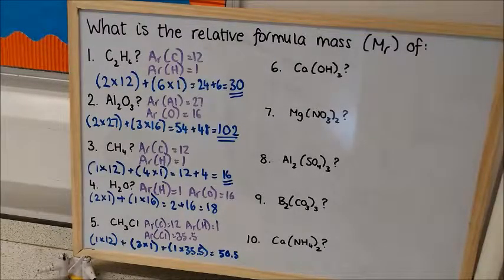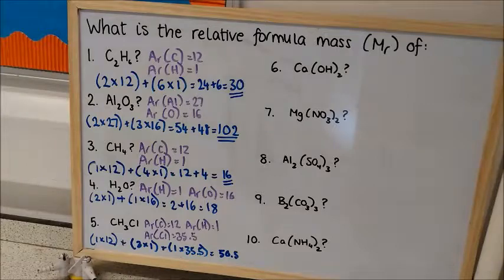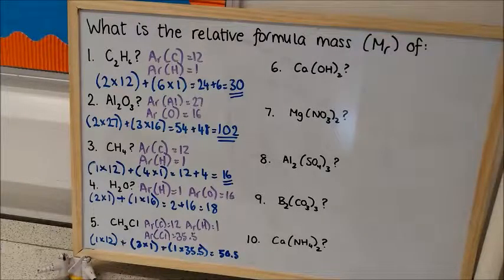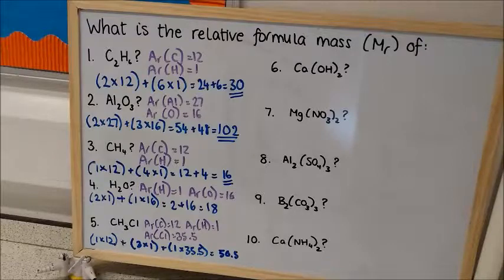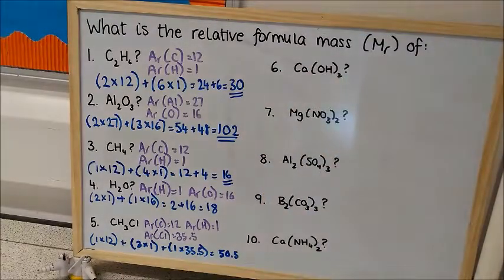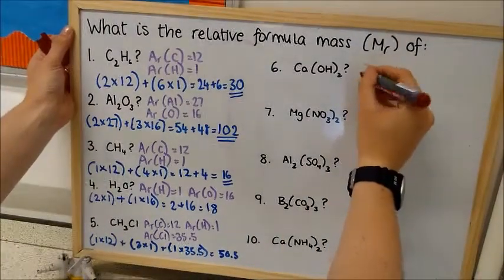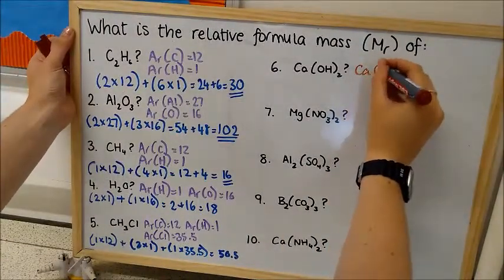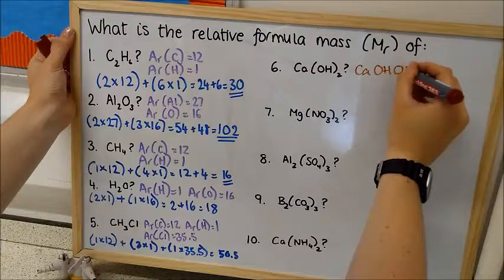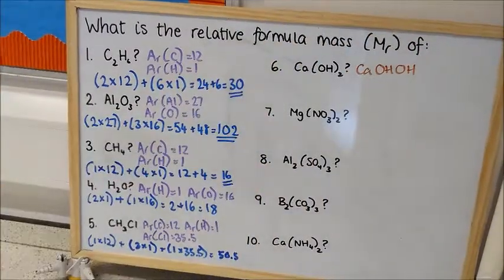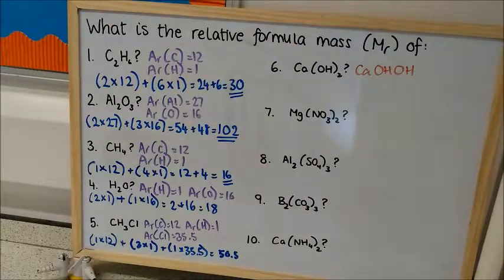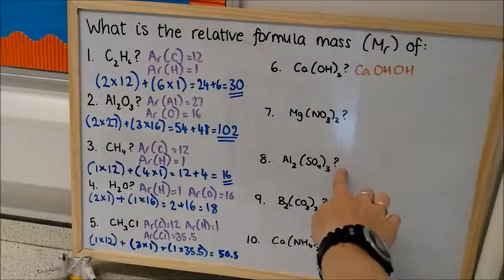Now these next five questions are slightly more complicated, because the formulae involve brackets. Now if you're not very confident about using brackets, what I would suggest you do is actually write it out longhand. So this calcium hydroxide here, we can turn into Ca OH OH, and for that first one you probably don't need to do that, but for these slightly more complicated ones later down.